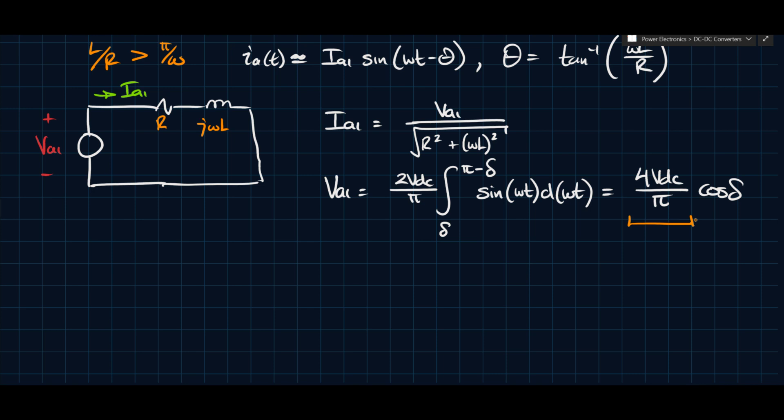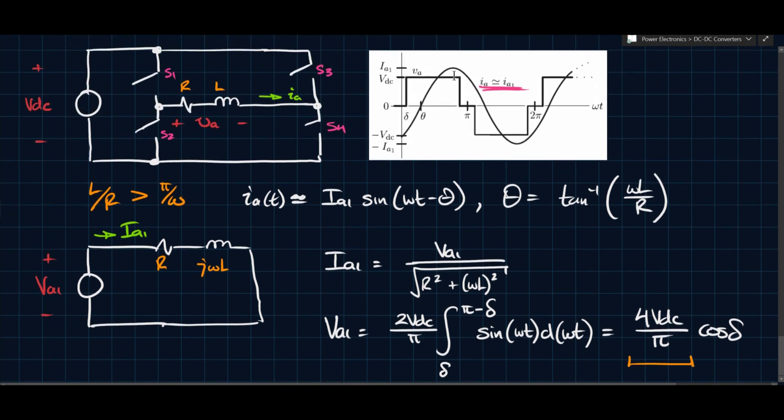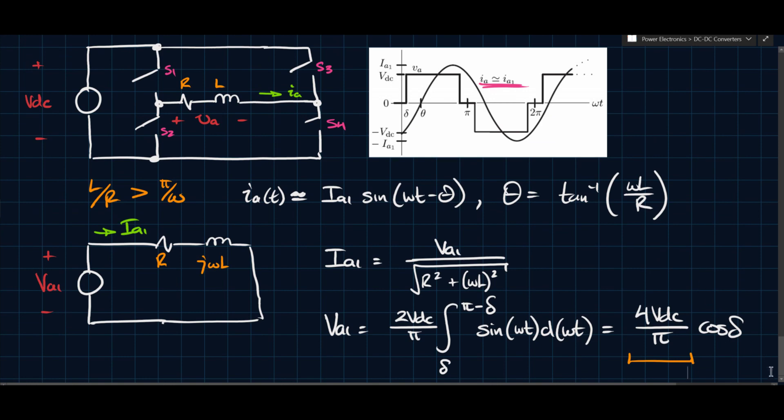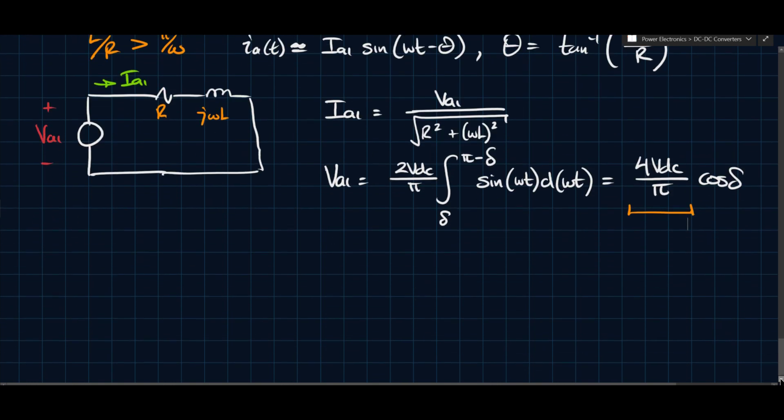And then the cos delta comes in because you have this type of waveform. It's not a perfect, it's not a normal square wave, essentially. It's a 3-level wave. So now, if we express the average power, or if we want to find the average power delivered to the resistor...